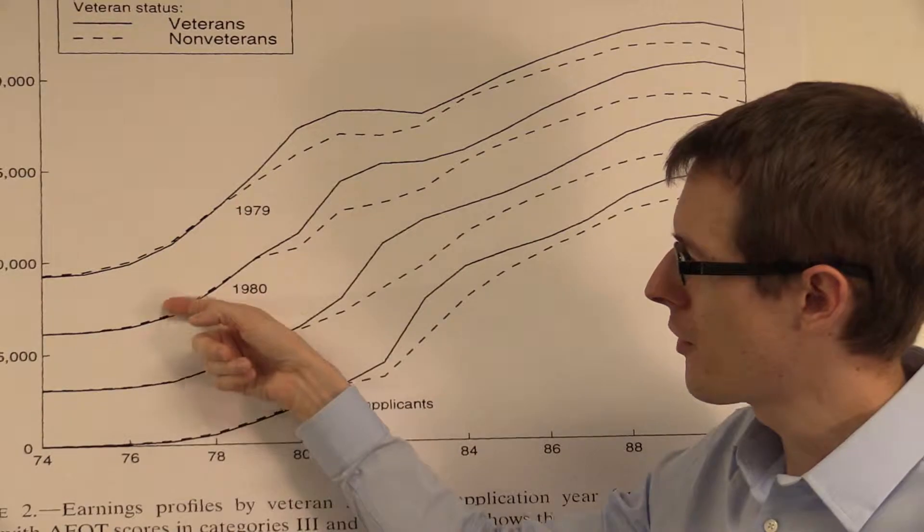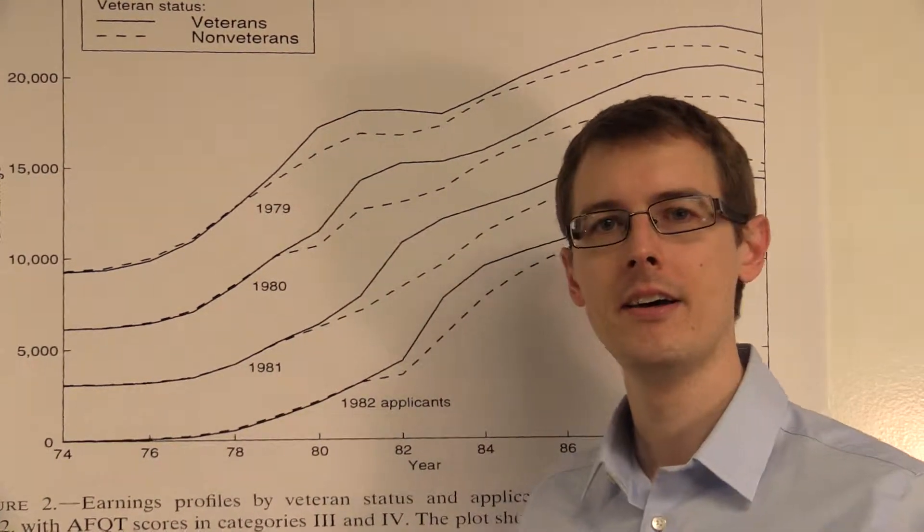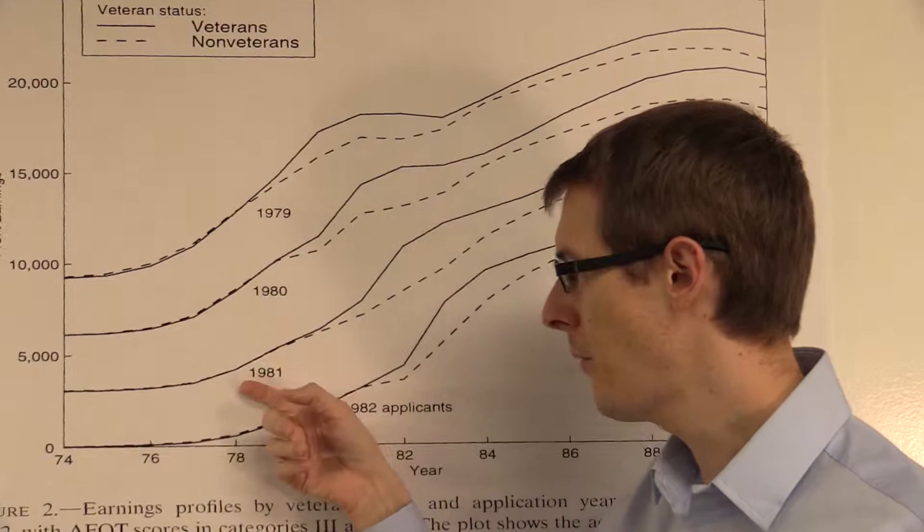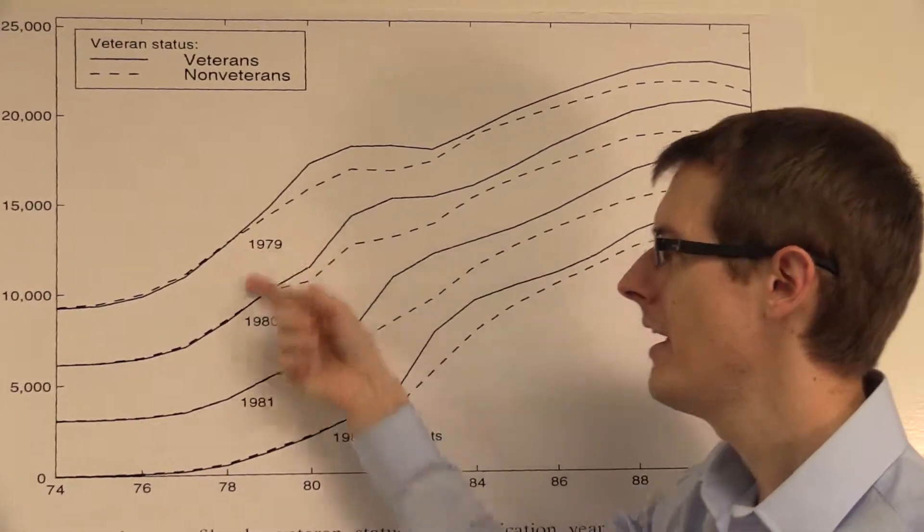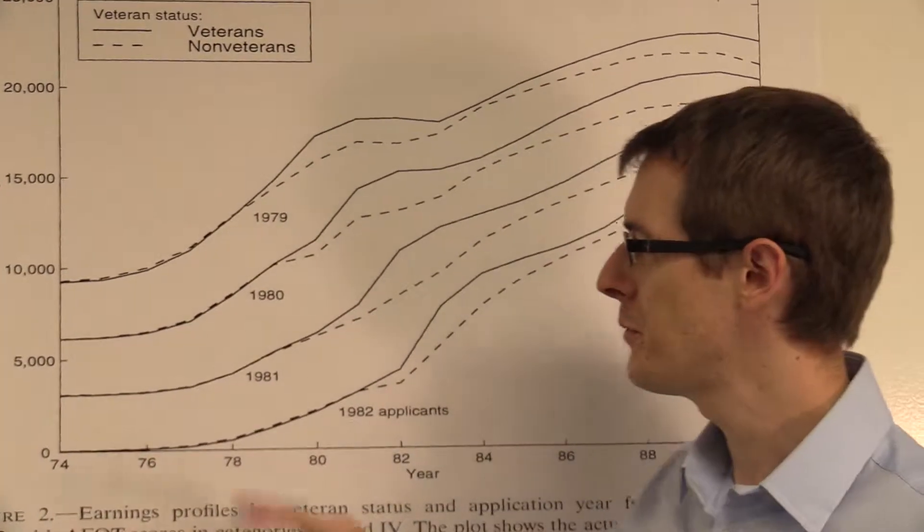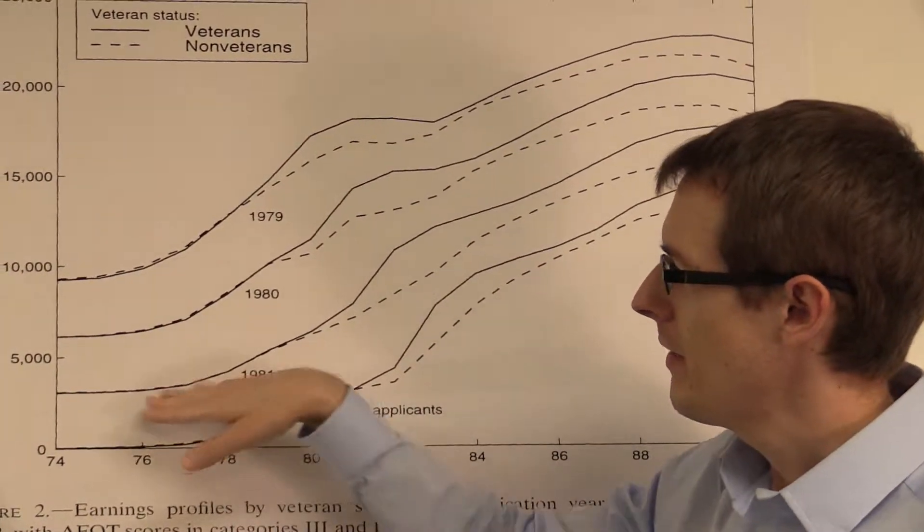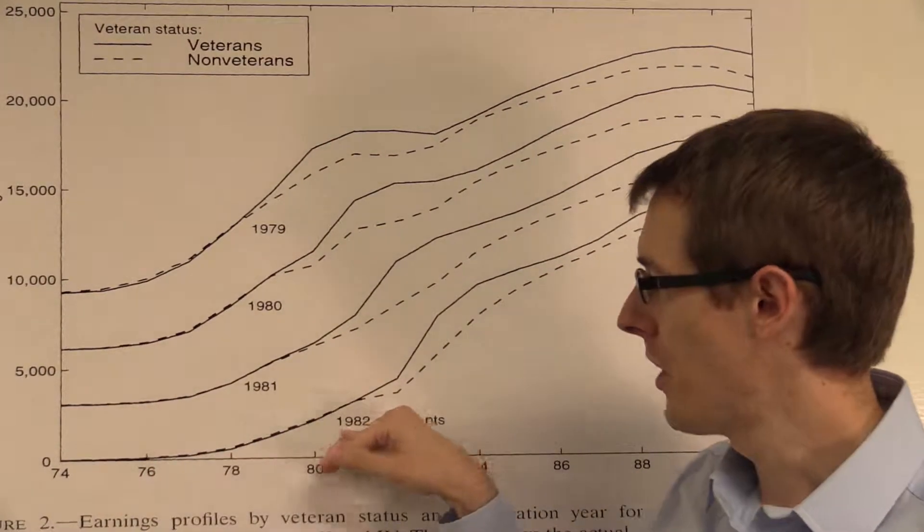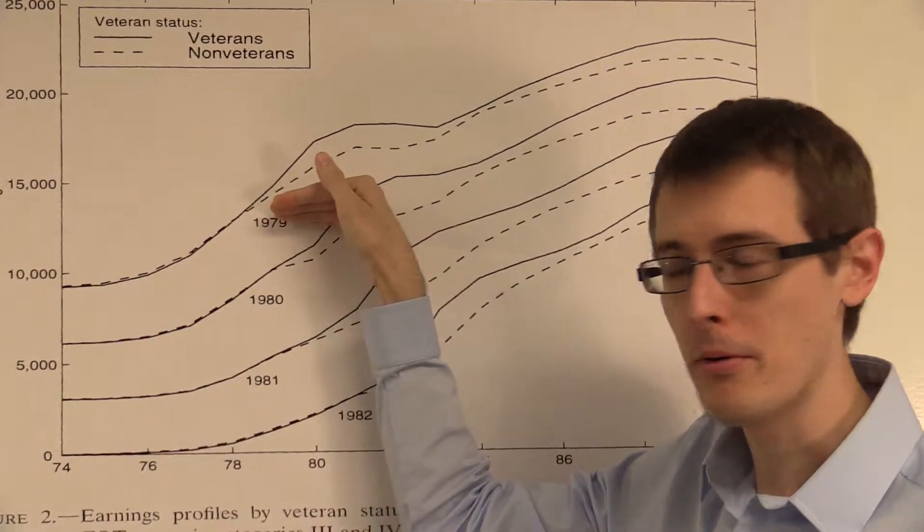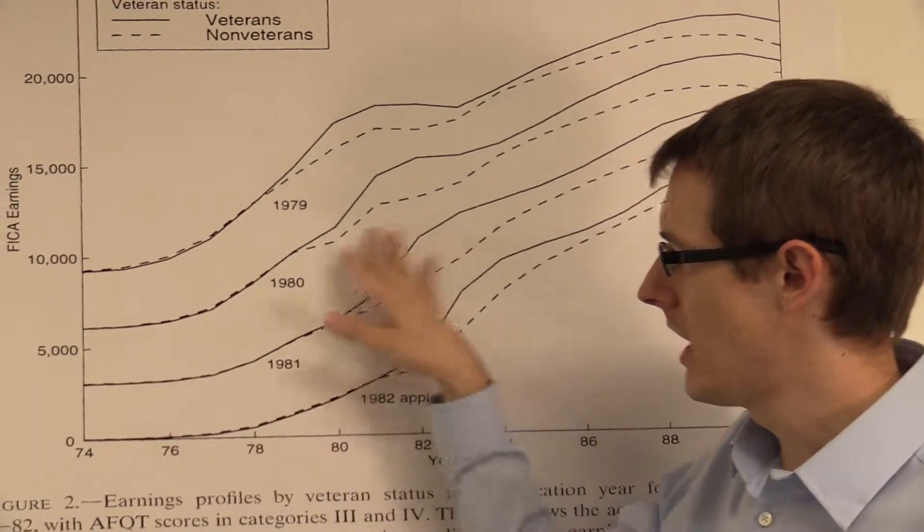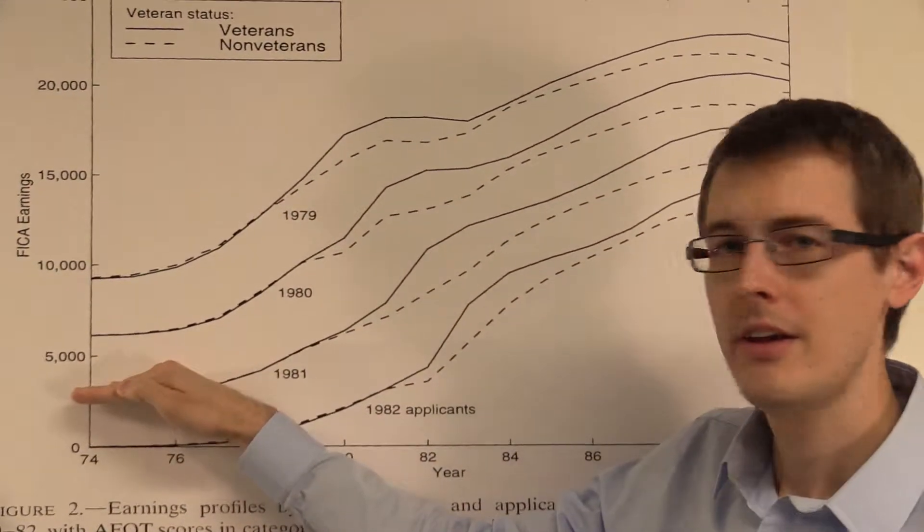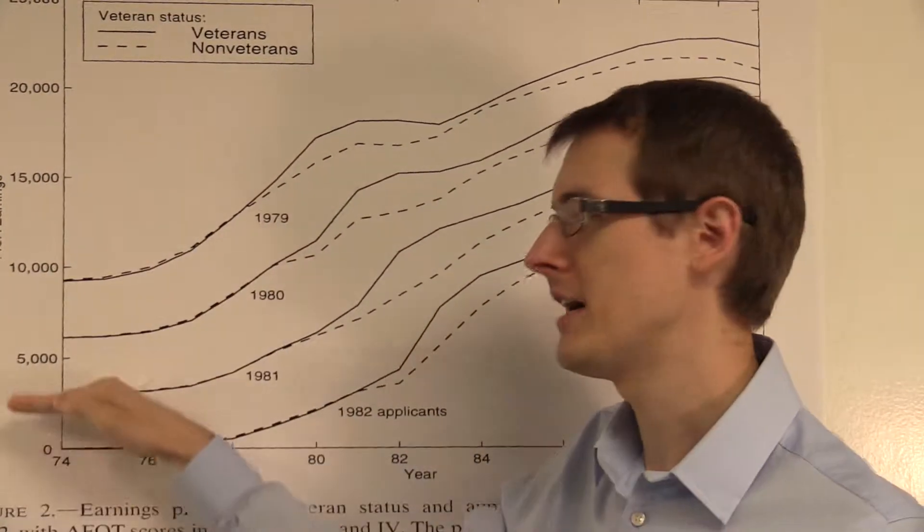Now in these other three lines, he's got the same exact data, but for people who applied in 1981, who applied in 1980, and who applied in 1979. And this graph's a little confusing when you first look at it, because it's really four different graphs, one for each set of people. But in order to make it more readable, and so these lines don't overlap, he just shifted each one of these up by three thousand dollars.